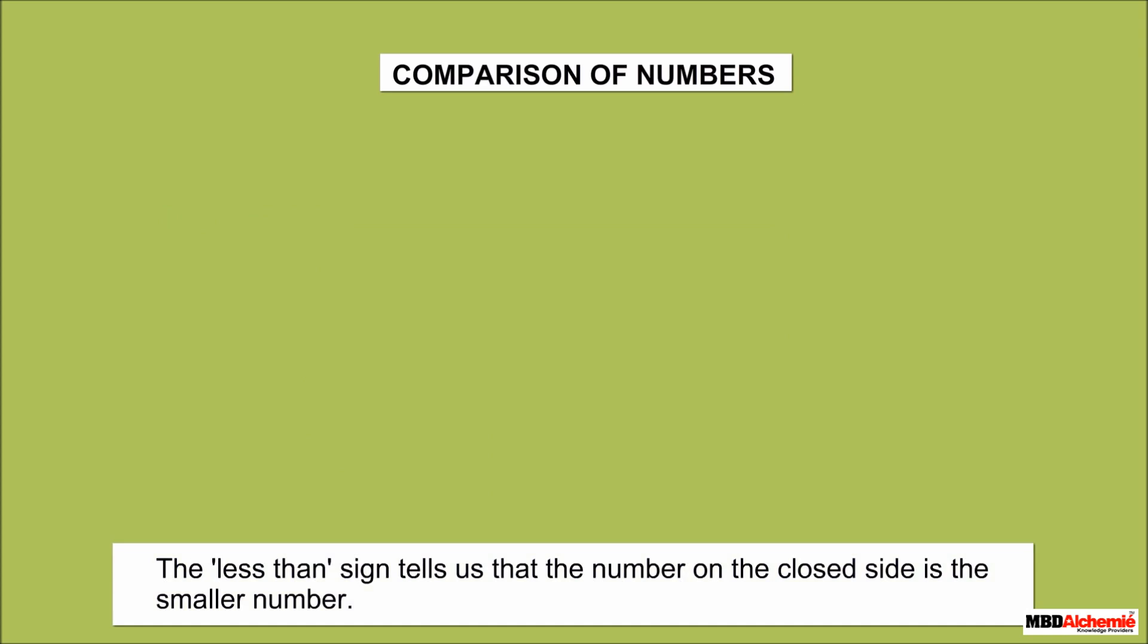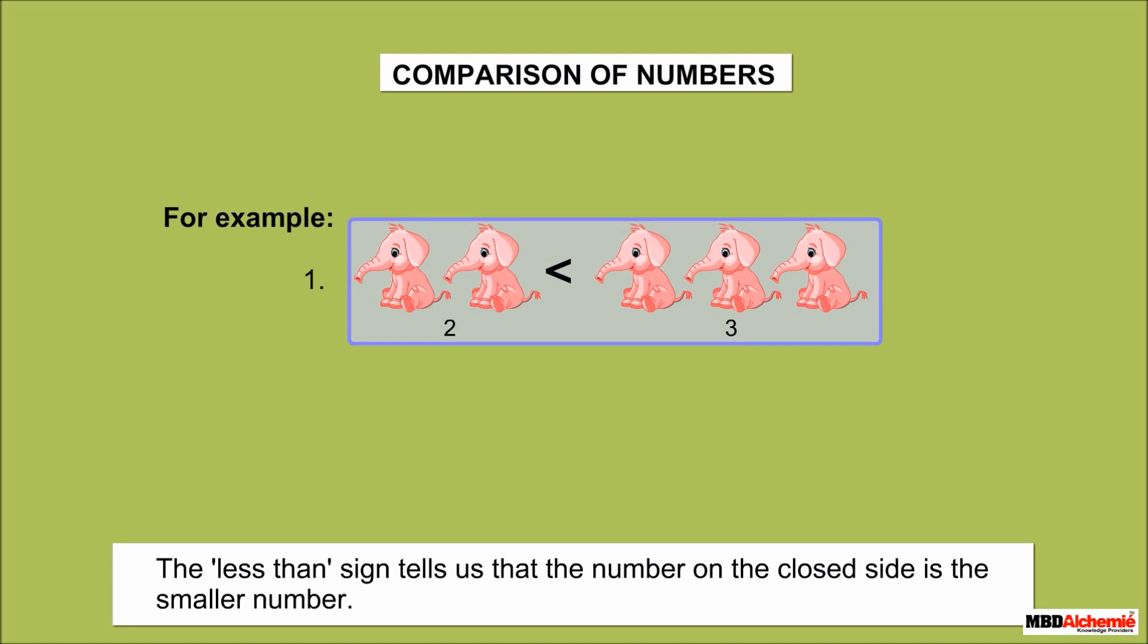The less than sign tells us that the number on the closed side is the smaller number. For example, 2 is less than 3, 62 is less than 166, 120 is less than 157, 188 is less than 189.